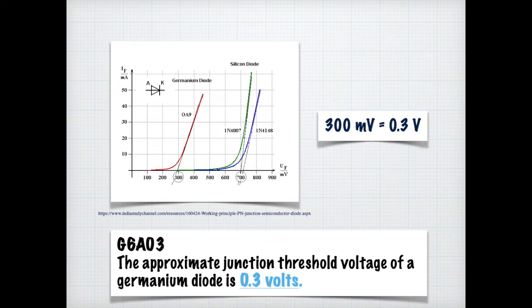On the exam, you may be asked what is the approximate junction threshold voltage of a germanium diode. If you look at the chart, you can see that a germanium diode is right around 300 millivolts, which is 0.3 volts, whereas a silicon diode, its threshold is over around 700. But for the exam, you need to know that the approximate junction threshold voltage of a germanium diode is 0.3 volts.